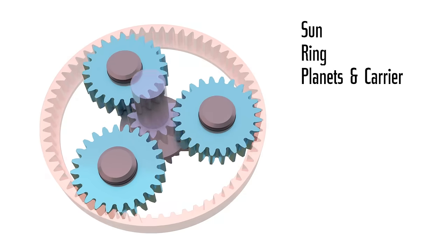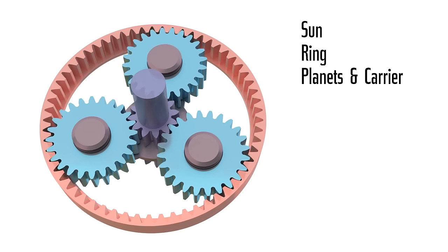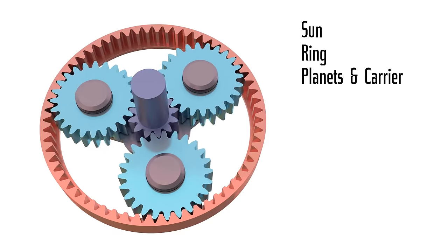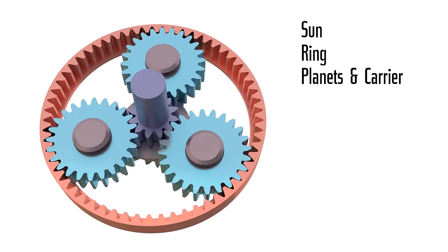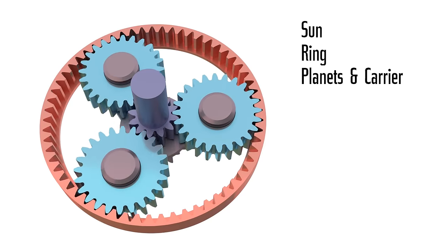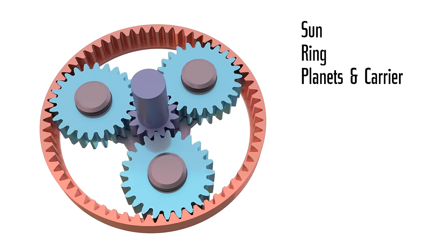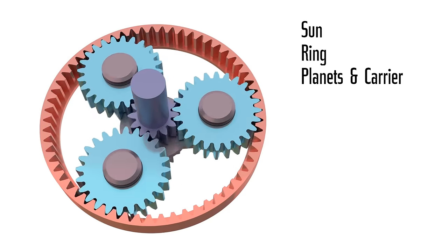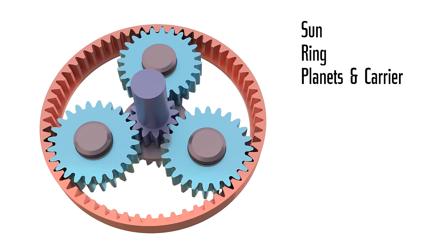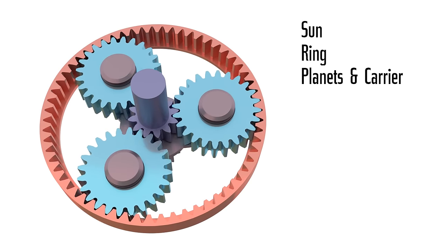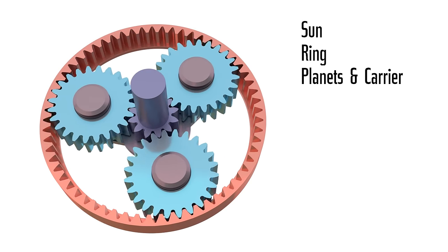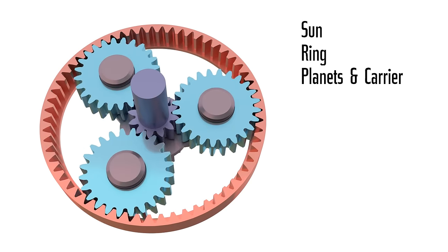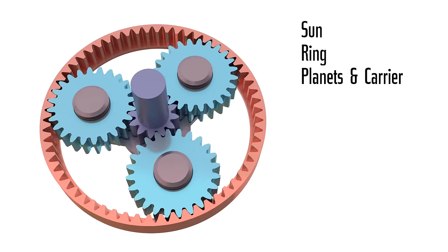Any of these three components can be made stationary, while the other two have an input and output shaft connected to them. In this tutorial, we will assume that the outer ring is stationary, the input shaft is connected to the sun gear, and the output shaft to the carrier.